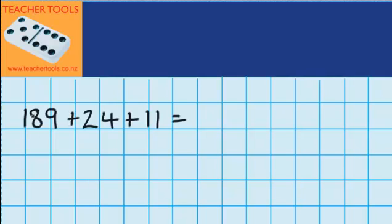Now the first thing I'm going to do is look at these three numbers and think are there any that I could group together which might make this question a little bit easier to answer. Well I can see that if I put these two numbers together, 189 plus 11, that would make 200. So by putting those together that equals 200.